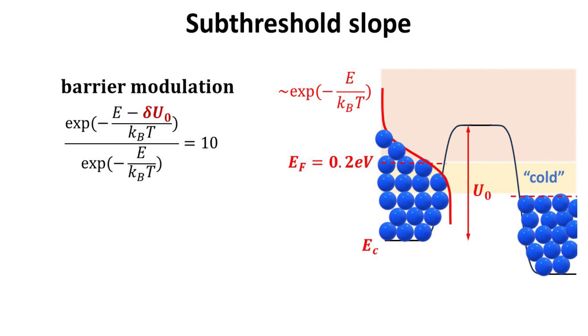If we ask the question, what is the barrier modulation to affect an order of magnitude change in the current? At room temperature of 300 Kelvin, one can show that the barrier modulation is 60 millielectron volts. Or we say, the current has a subthreshold slope or swing of 60 millivolts per decade.